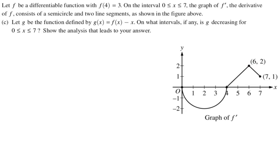Alright, let's take a look at the next one. Let g be the function defined by g of x equals f of x minus x. On what intervals, if any, is g decreasing between 0 and 7? Show the analysis that leads to your answer. So I'm going to have to find the derivative and then figure out when the derivative is negative, right? Because that's how you figure out when something is decreasing. So g prime of x is going to be f prime of x minus 1.